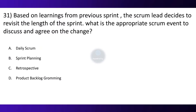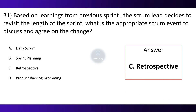Question 31. Based on learning from the previous sprint, the scrum lead decided to revisit the length of the sprint. What is the appropriate scrum event to decide and agree on the change? Option A: Daily Scrum. Option B: Sprint Planning. Option C: Retrospective. Option D: Product Backlog Grooming. The correct option is Retrospective.